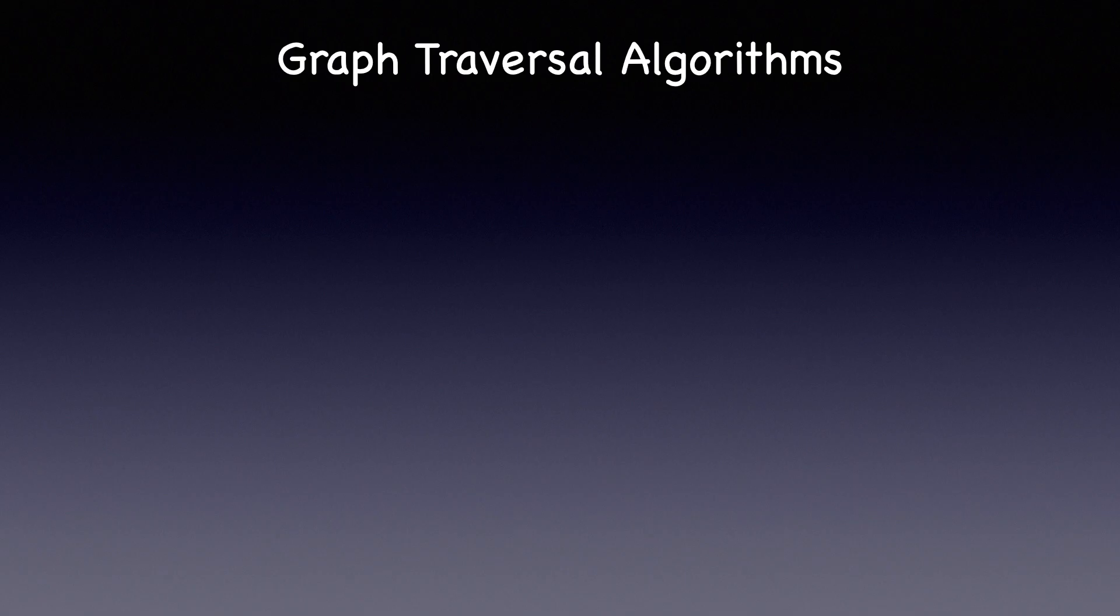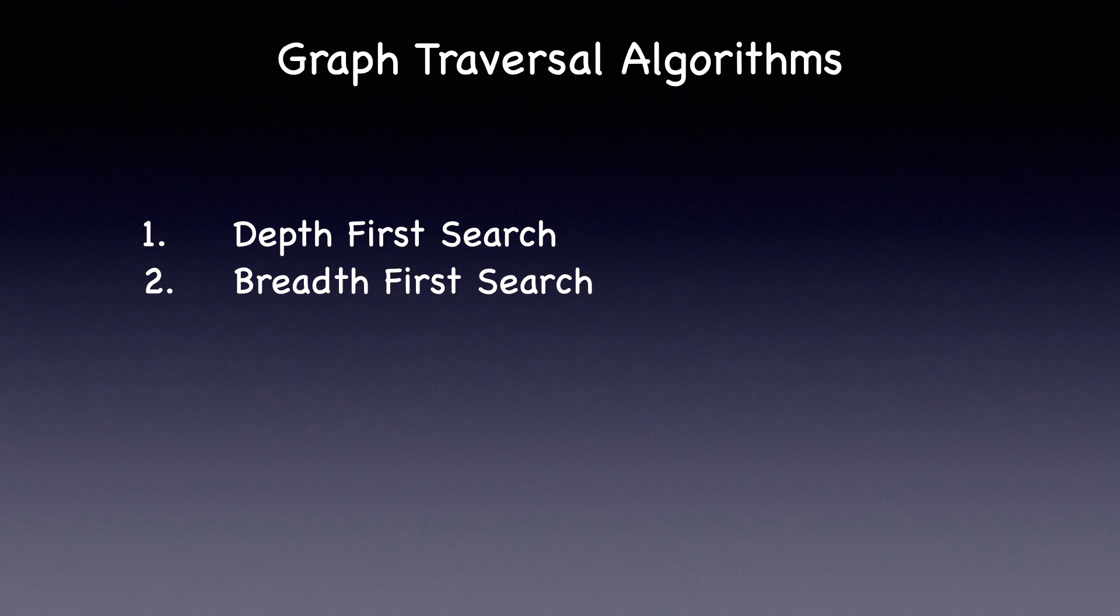There are two very popular algorithms to navigate nodes or search for something in a graph. One is the depth first search and the second one is the breadth first search. Let's try to understand the general idea behind a depth first search.